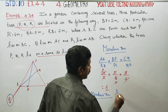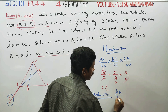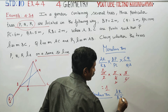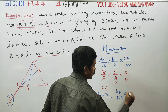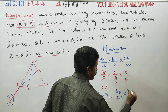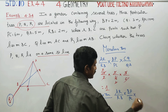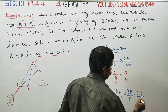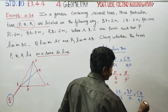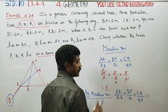By Menelaus's Theorem: AR by RB, multiplied by BP by PC, multiplied by CQ by QA, is equal to 1.